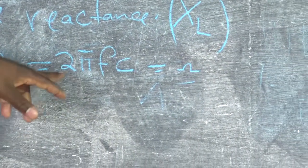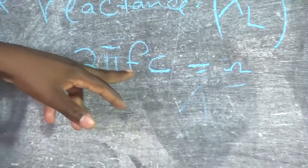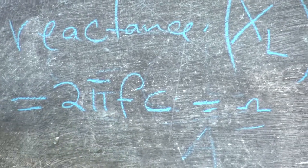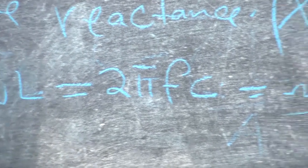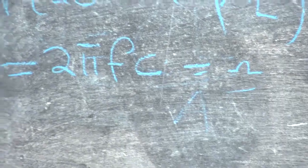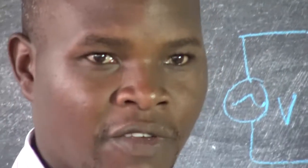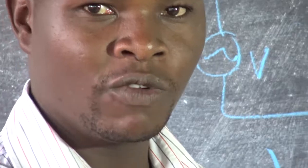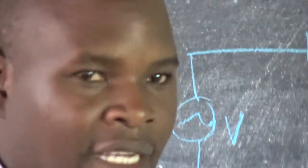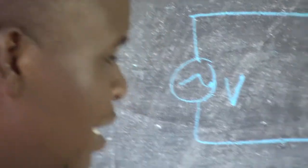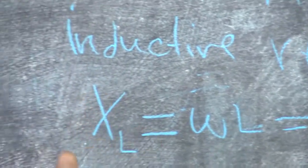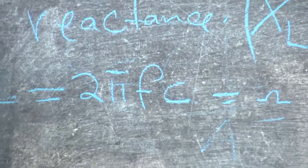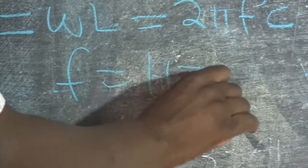In this formula, 2π is a constant, f is the frequency of the supply, and L is the inductance. In our Kenyan system of AC electrical energy transmission, the standardized frequency is 50 hertz. So whenever you meet a question — in an exam or elsewhere — if the frequency is not specified, we normally assume it is 50 hertz. Frequency is measured in hertz, which is its SI unit.